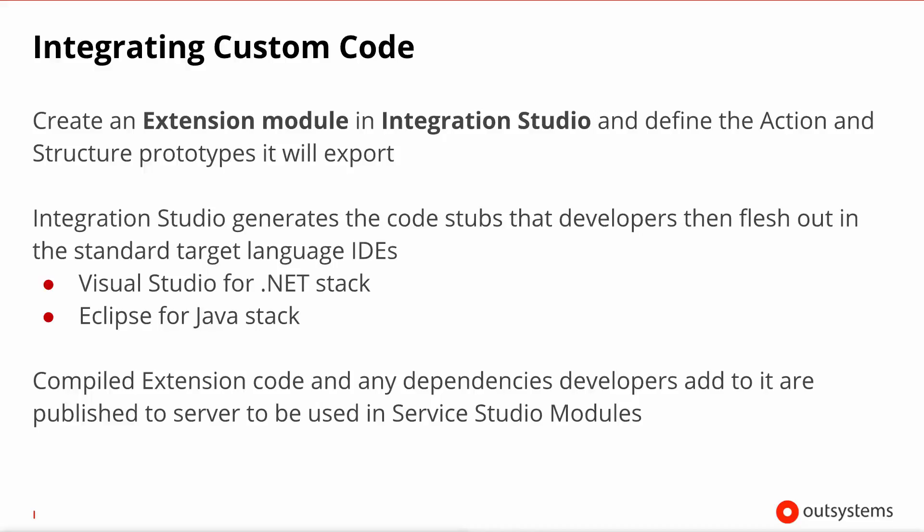It's important to note that you won't be able to call the Java code from a Microsoft server. Once you finish writing your code using the IDE, the extension will be compiled together with any dependencies that you've added to the project, and it will be published into the server ready to be available to Service Studio modules. Of course, you're not limited to writing all of the code yourself — for example, if you purchase a third-party assembly, you'll be able to call it from this custom code and use this procedure to include this external resource into your project.